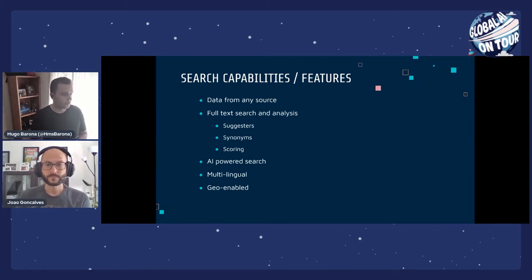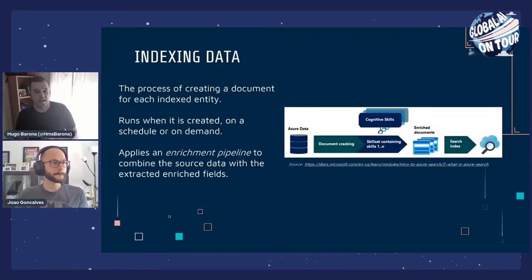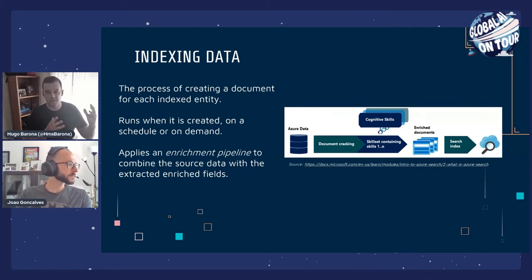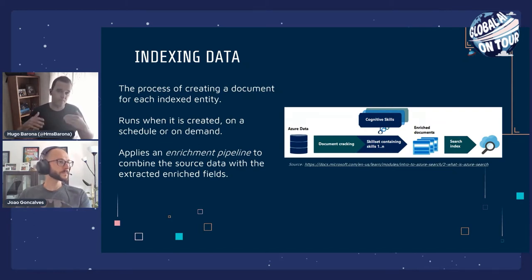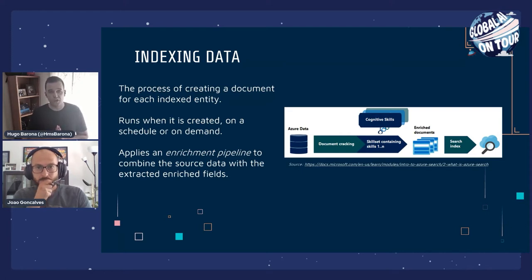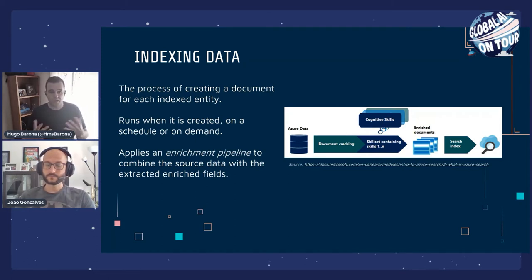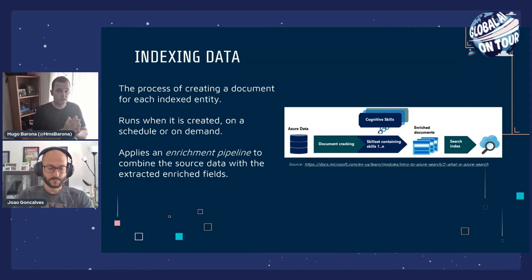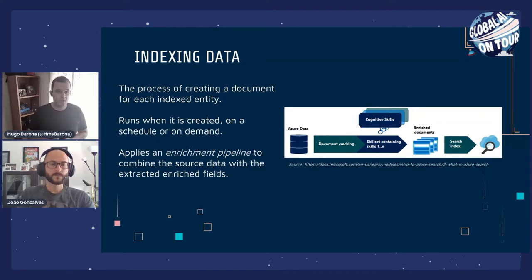One important part of your Azure Search solution is the processing and indexing of your data. Typically you have your data located on Azure and you want to import it to Azure Search to provide it to your websites, web apps, and mobile apps. There are two models for indexing data: the pull model and the push model. With the pull model you can use the indexer feature — a crawler that extracts data from an external Azure data source and populates your search index using field mappings to map source and destination fields.